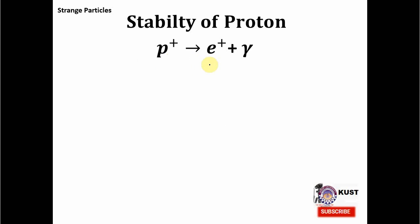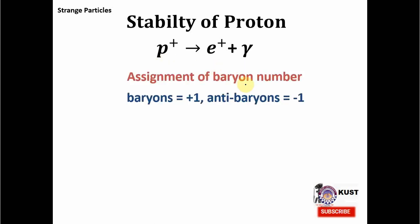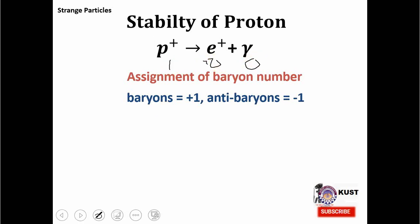So we need to discover a law which is violated here, and people discovered the law of conservation of baryon number. To apply this law, we first assign baryon number to every particle: positive 1 to baryons, negative 1 to anti-baryons, and 0 to the rest. This assignment is completely arbitrary, but it actually helps. If you look at the proton decay reaction, the proton has baryon number 1, but the positron and gamma have baryon number 0. So baryon number is violated here, and we cannot allow this to happen.